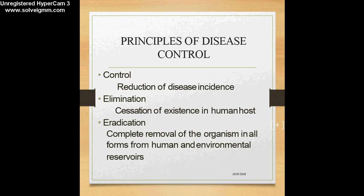The term eradication refers to complete removal of the infectious agent in all its forms — whether spore form or vegetative form — not only from the human hosts but also from the environmental reservoirs. So we are removing the organism completely from wherever it can be found or survive. In the process of eradication, we first need to achieve elimination, and before achieving elimination, control is very important. These three essentially form the principles of disease control.